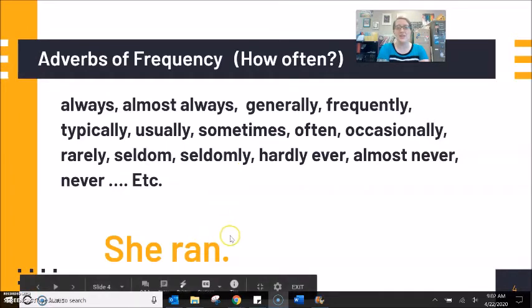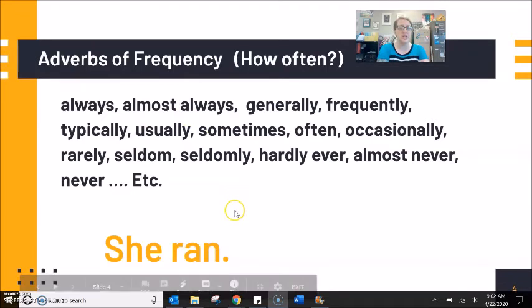Again, thinking about that sentence, she ran. She almost always ran in the morning. She sometimes ran in the morning. She hardly ever ran. She never ran. How often did she run?